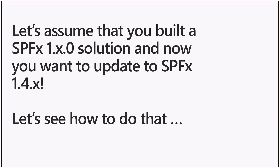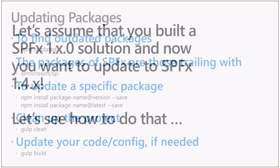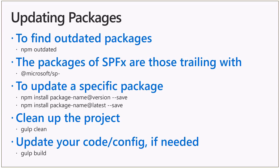So let's assume that we have a SharePoint framework solution — it can be a client-side web part or an extension, or whatever you've built using the SharePoint framework — and let's say that now you want to update it to the latest version of the packages. So let's see how to do that following the right pattern. First of all, you need to find what are the outdated packages in your environment. NPM provides us with a command, which is the outdated command, which will tell us what are the outdated packages in our current solution.